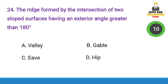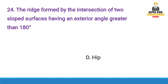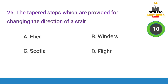Next question: The ridge formed by the intersection of two sloped surfaces having an exterior angle greater than 180 degrees — Answer option D, Hip.